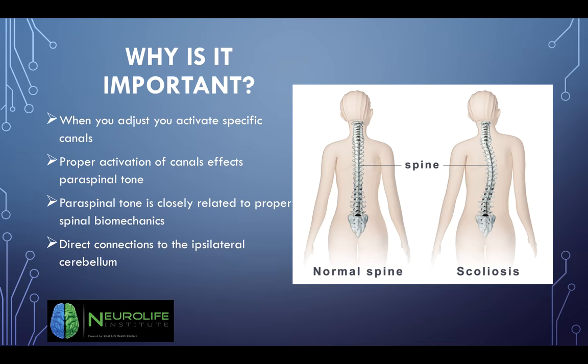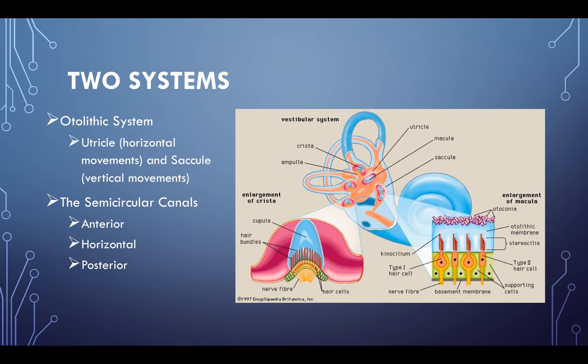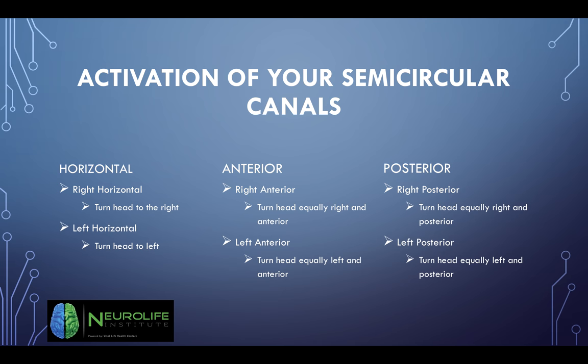There are two systems: the otolithic system, comprised of the utricle for horizontal movements and the saccule for vertical movements — think of lifting a heavy sack up and down. The semicircular canals handle angular movements: the anterior canal covers front-right and front-left, the posterior canal covers back-left and back-right, and the horizontal canal handles turning the head right to left.